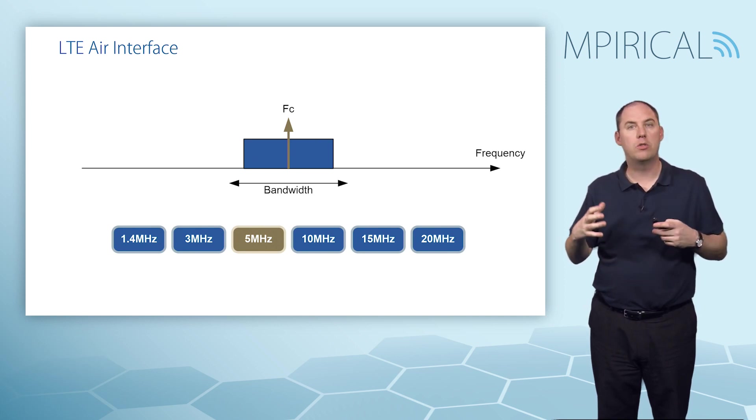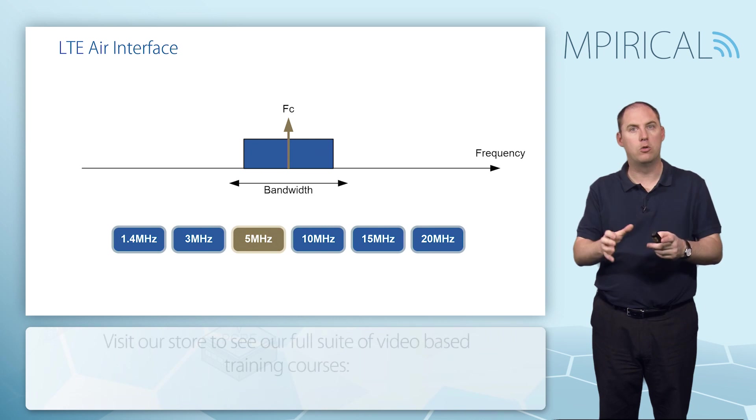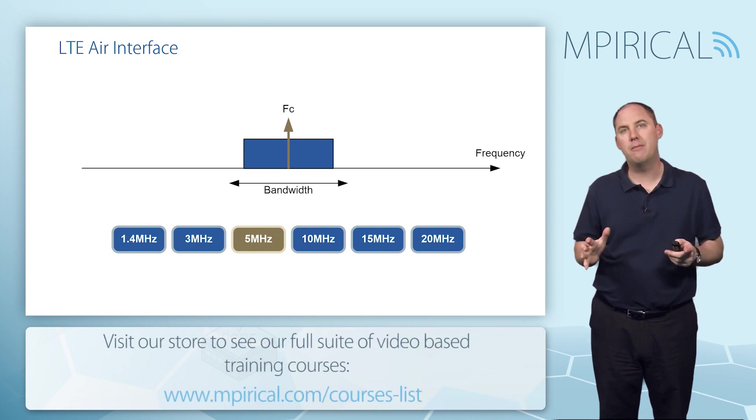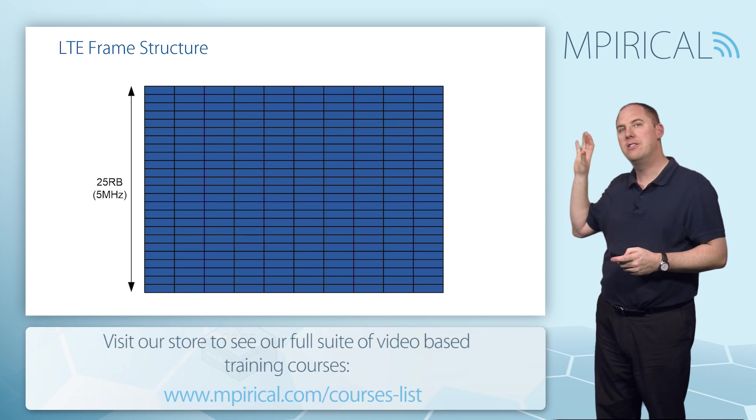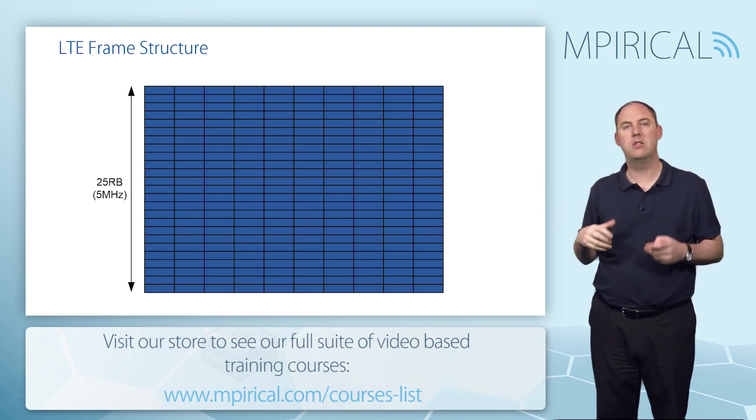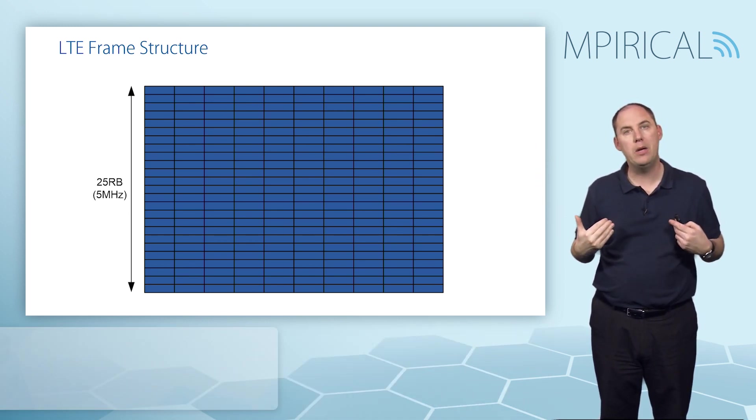Based on the LTE system, we're going to have a number of sub-carriers, and those sub-carriers are going to make resource blocks. If we looked at a 5 megahertz channel, we would actually be looking at 25 resource blocks. So this is the frequency component, and then we go over time.